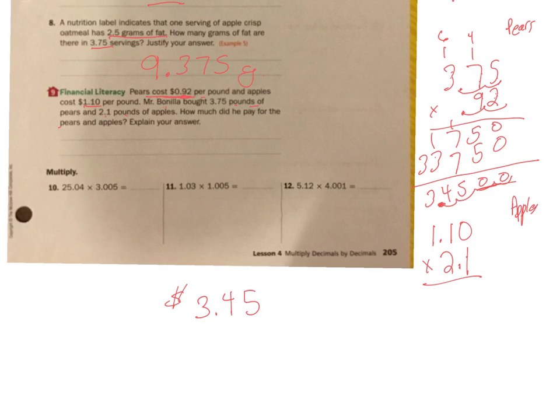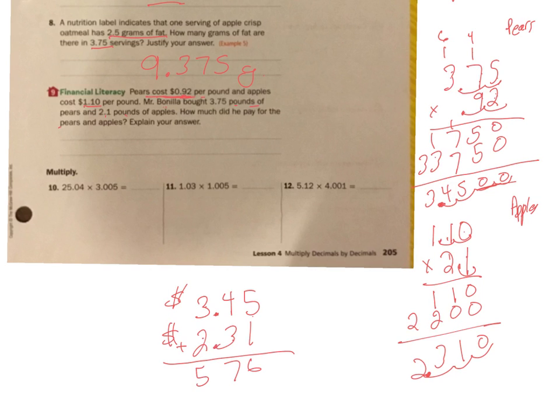Now let's go to apples. 1 times 0 is 0. 1 times 1 is 1. 1 times 1 is 1. Add my 0. 2 times 0 is 0. 2 times 1 is 2. 2 times 1 is 2. All right. 0 plus 0. 1 plus 0. 1 plus 2. 2. 1, 2, 3. 1, 2, 3. 2 dollars and 31 cents. Now, so I got my pears and my apples. Let's add them up. Let's see what he spent on all of it. 5 plus 1 is 6. 4 plus 3 is 7. 3 plus 2 is 5. We're adding decimals. They had to be lined up, so they just dropped down. So he spent a total of $5.76.